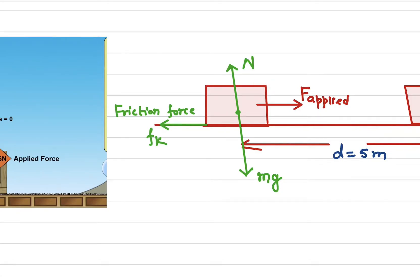As the object is moving with a constant speed, that means the total force is exactly equal to zero. An object can move with a constant speed only if the total force is exactly zero. Since we are applying an applied force, in order to make the total force zero there must be a friction force — some opposing force — and this friction force must be equal to the applied force.